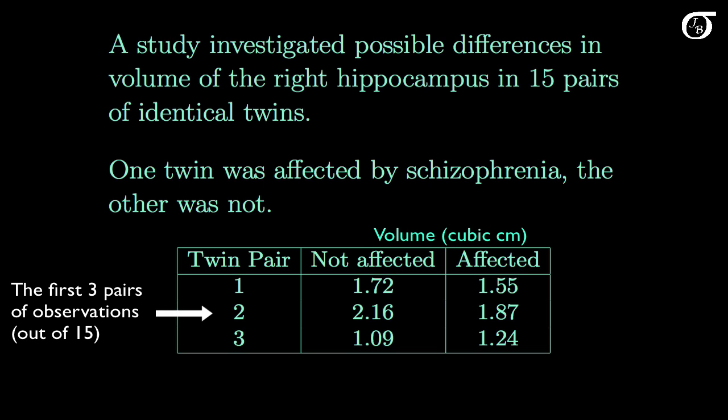Identical twins are very valuable in statistical studies like this, as genetic variability is eliminated and we can focus in on the effect we're interested in. Here we don't have two measurements on the same individual, but again we have dependent samples. This is one pair of twins, so there is a relationship there. The observations within each pair are related and dependent.